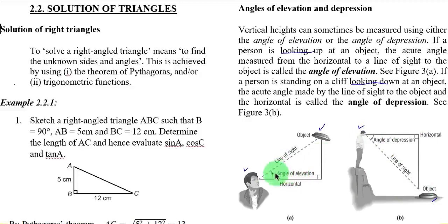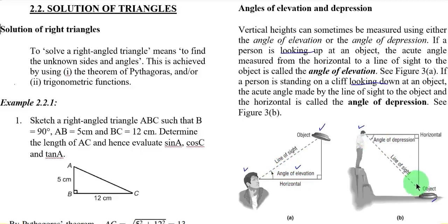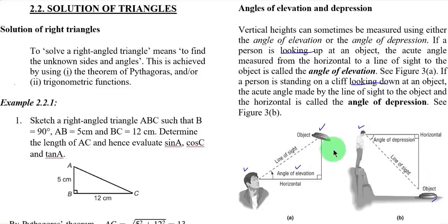Similarly, if this is your object and this is your line of sight, the angle formed between that line of sight and the horizontal line — when looking downward — is the angle of depression. We will use this concept in solving problems involving angle of elevation and angle of depression, and we will solve mostly right triangles.